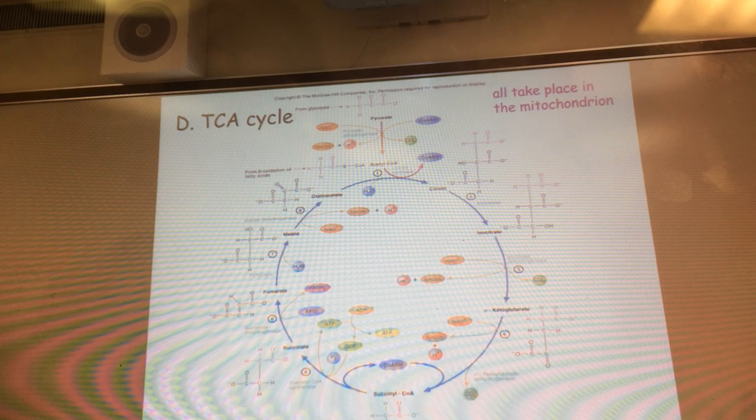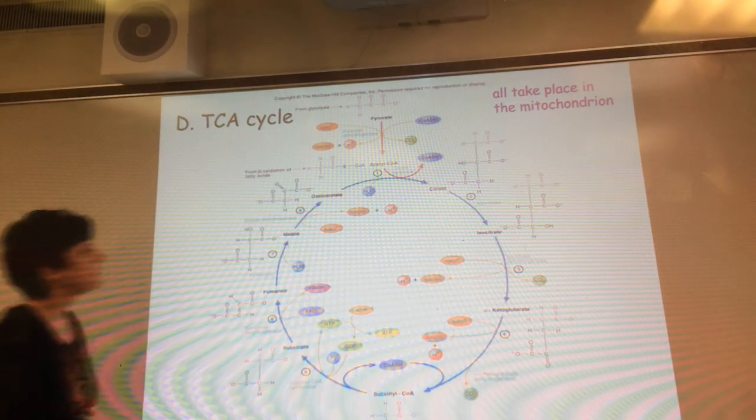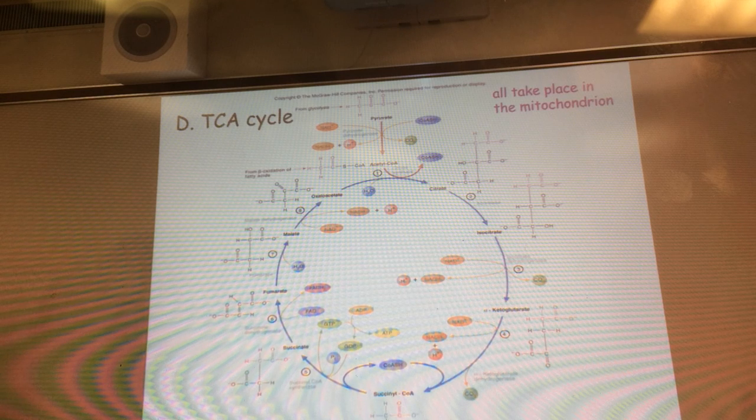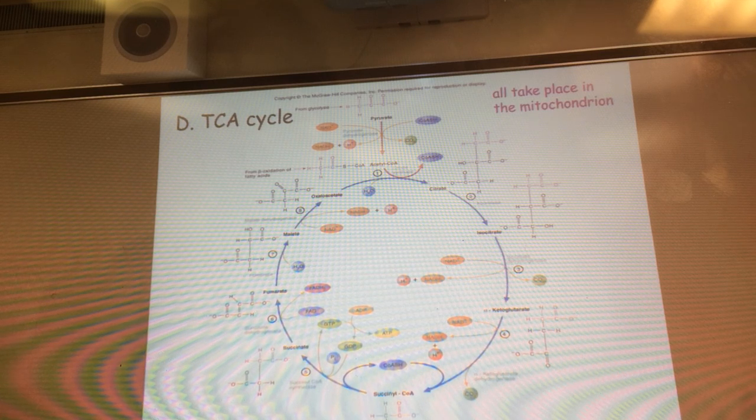We've got pyruvate right here. We've got three carbons for this pyruvate, and one of our carbons comes off as carbon dioxide. So which carbon from pyruvate is actually coming off?